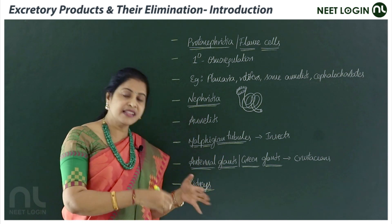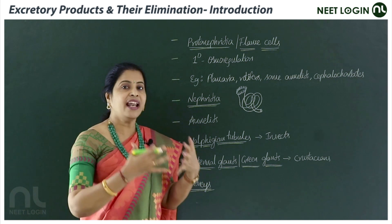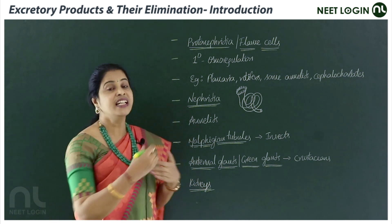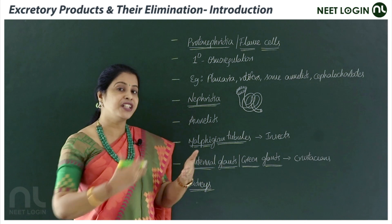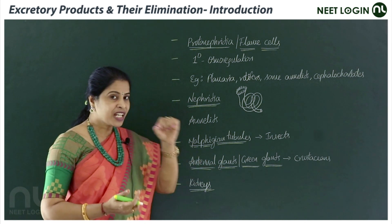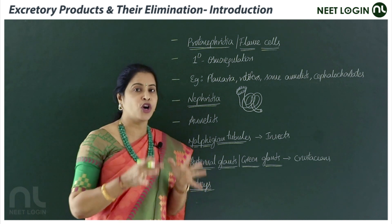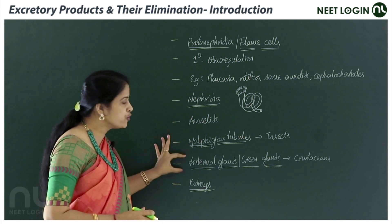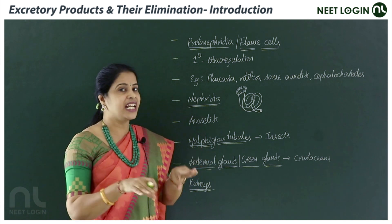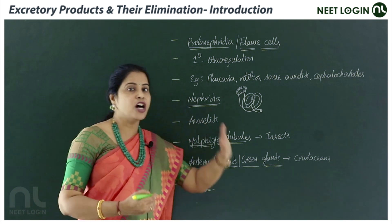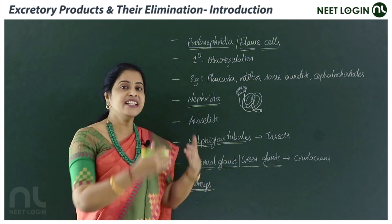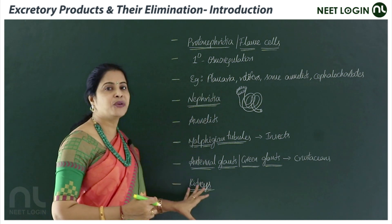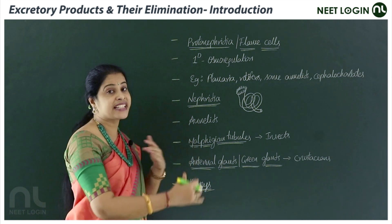In molluscs and higher vertebrates, the well-evolved and highly tubular complex organs are the kidneys, responsible for filtration and elimination of excretory products. All excretory organs — protonephridia, nephridia, malpighian tubules, and kidneys — are also involved in osmoregulation. As stated at the beginning, homeostasis, osmoregulation, and maintenance of fluid and ionic balance are prime requirements for the survival of organisms. This concludes the evolutionary aspects of animal excretory organs.